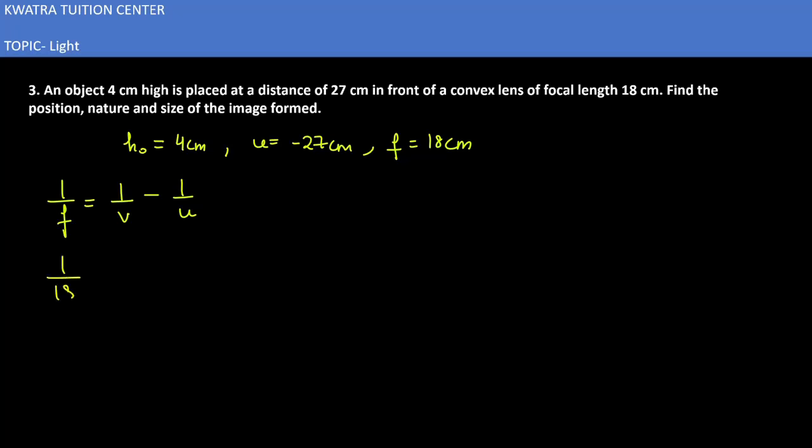Now how much is the value of f here? 18. We substitute v as it is. So this is minus 27. 1 by 18 would be there. On the right side you have 1 over v plus 1 over 27.